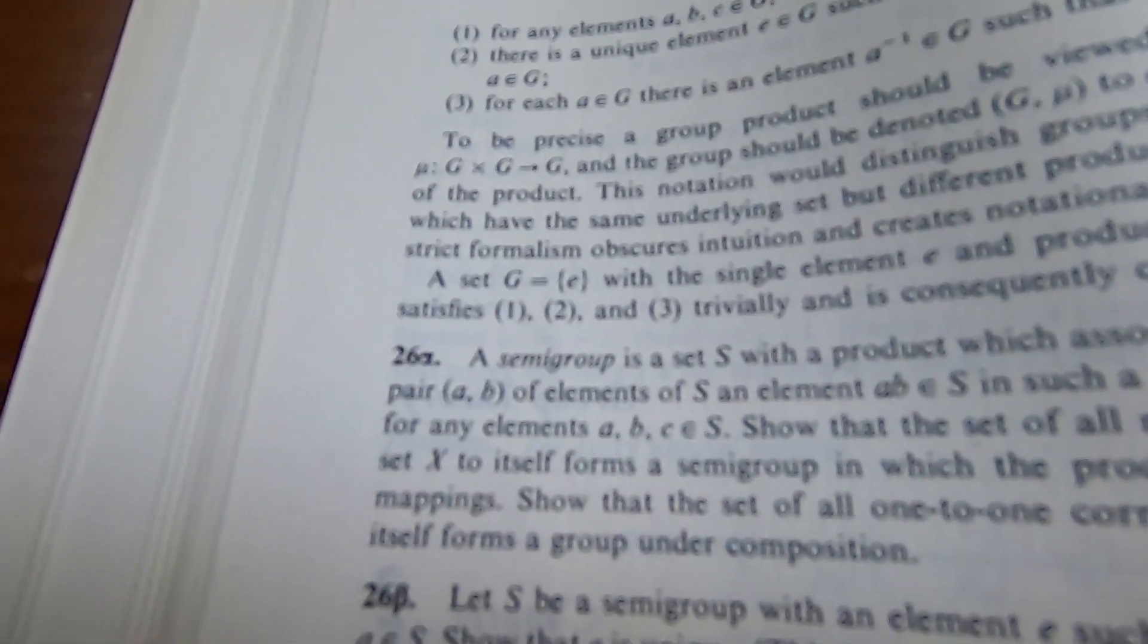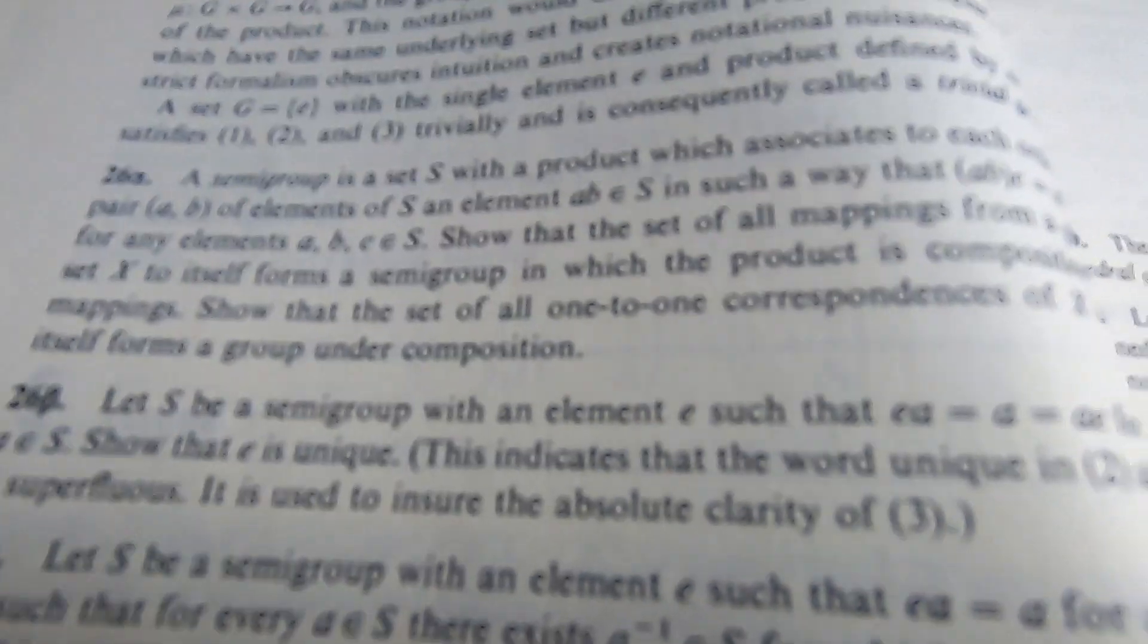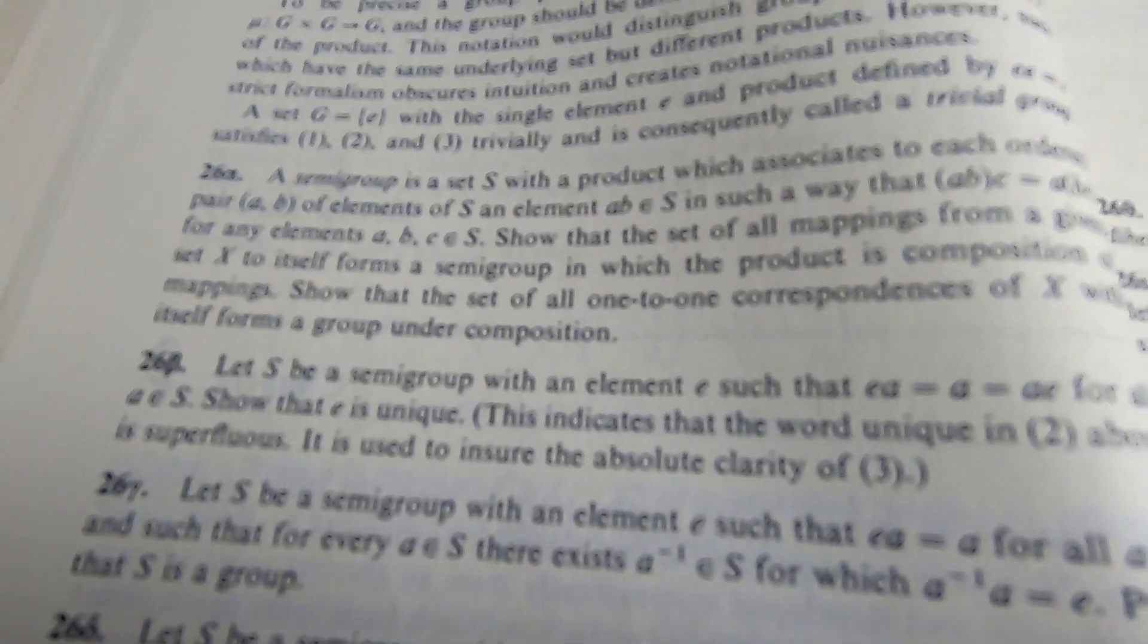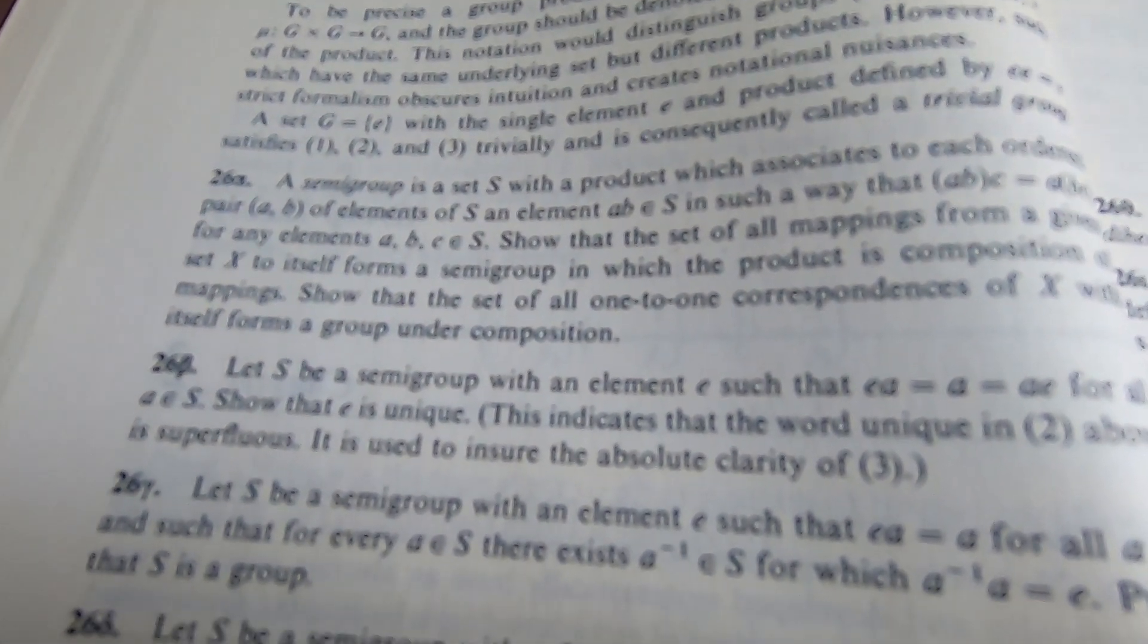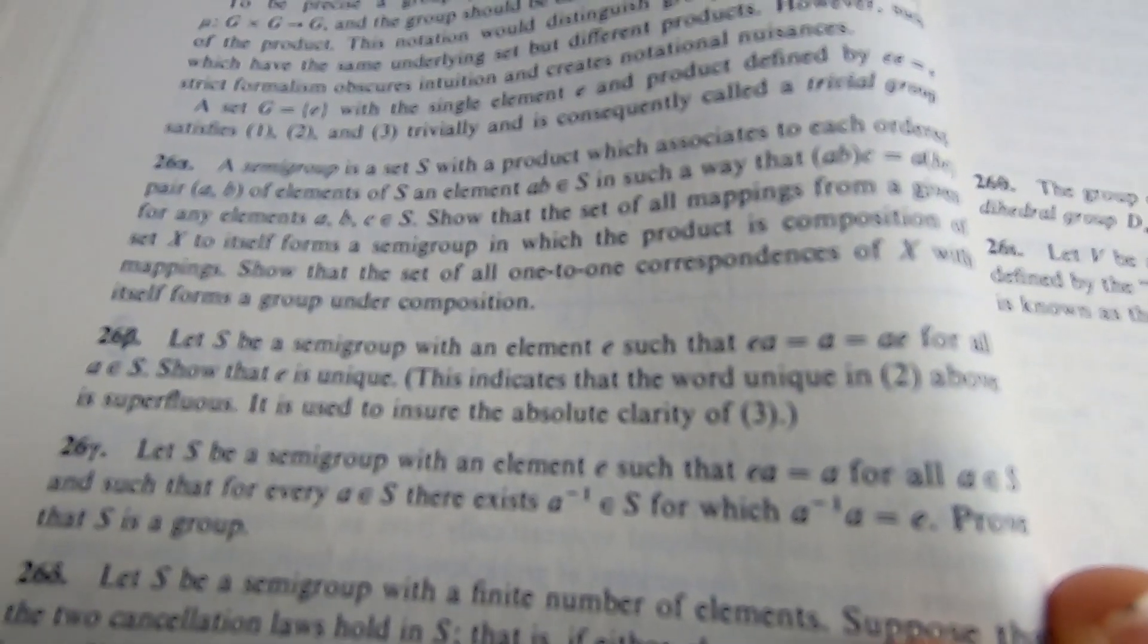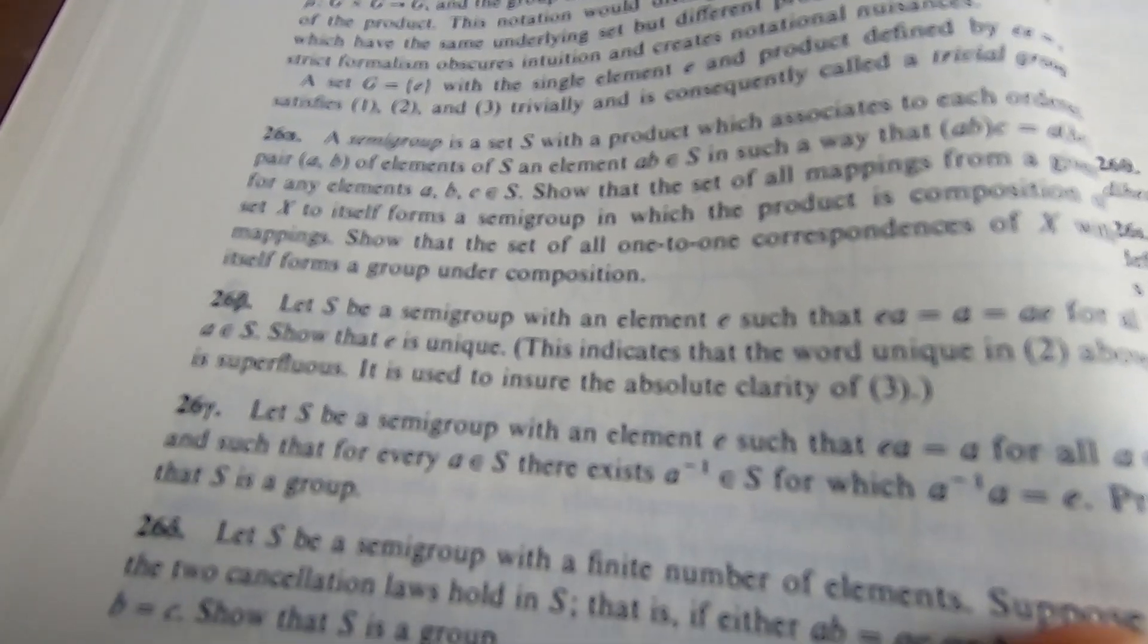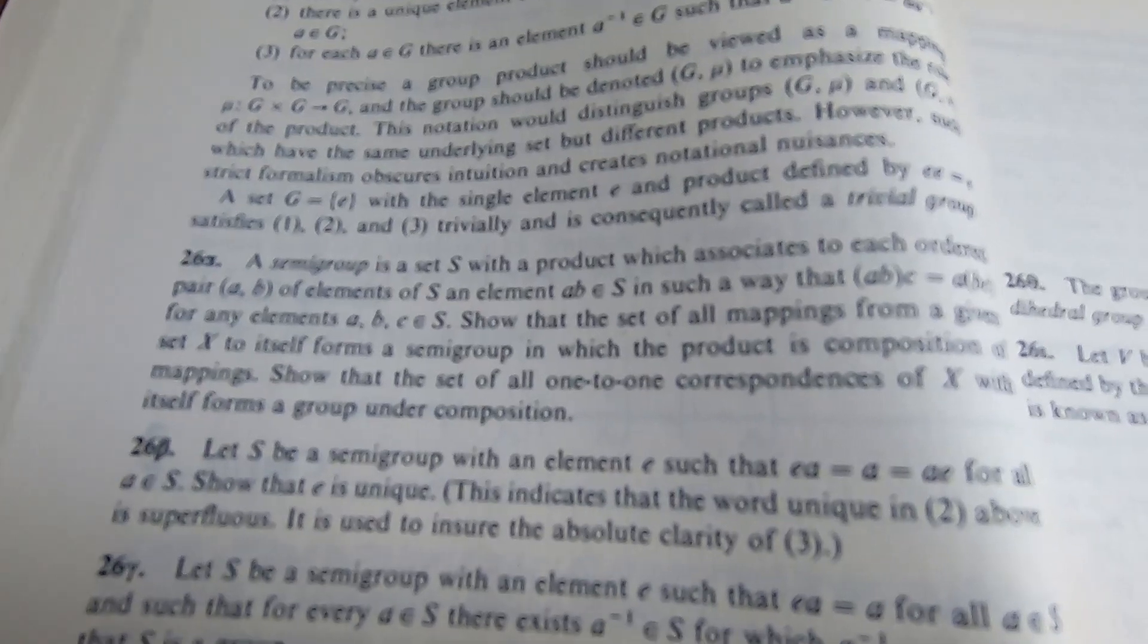And then it says 26 alpha, and then it defines a semi-group. It says a semi-group is a set with a product which associates to each ordered pair AB of elements in S, another element AB in S, such that we have associativity. Then it says, show that the set of all mappings from a given set X to itself forms a semi-group. So it's asking you to prove something right away.